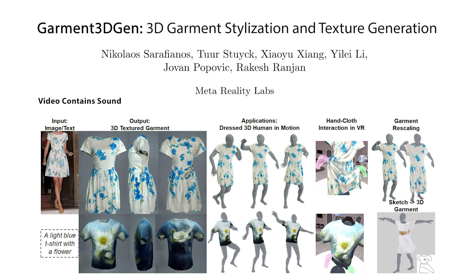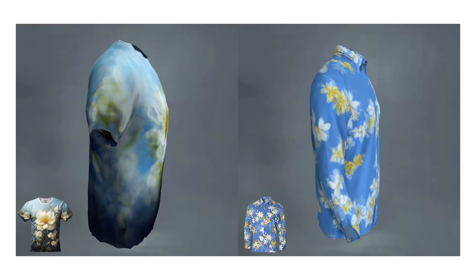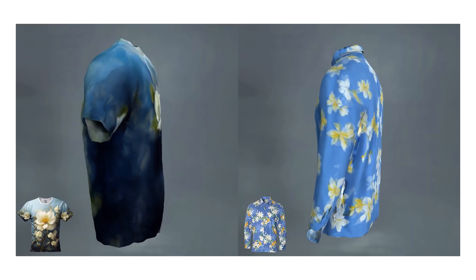We present Garmin3dGen, a novel method to synthesize 3D garment assets given a single input image or even just a single text prompt. Traditionally, garment creation for simulation is a lengthy process that requires specialized software operated by trained artists with expert knowledge. In contrast, our method offers frictionless generation of simulation-ready garments with detailed textures.